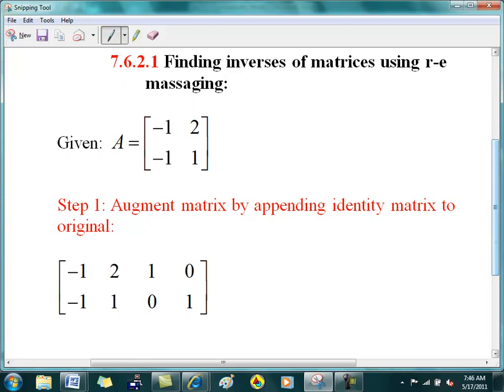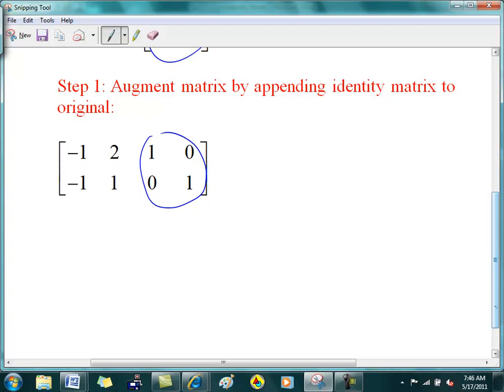So what you want to do is you want to take the original matrix, augment it by putting an identity matrix here. And then massage this thing so that this guy becomes one, zero, zero, one. And then your inverse is going to show up here. Your inverse will show up here. And you're going to do the massaging a la Gauss-Jordan. You guys help me on that? Let's work on that then.